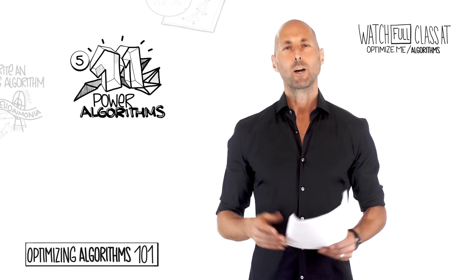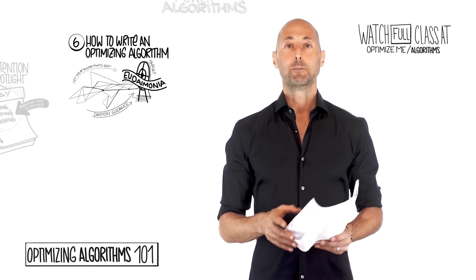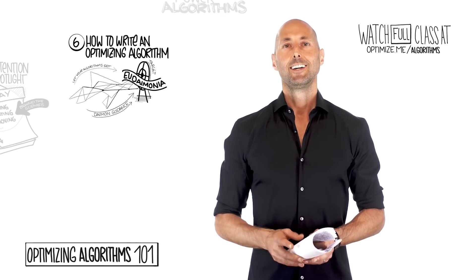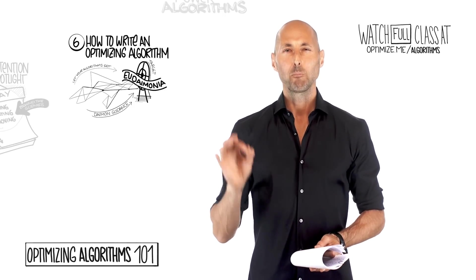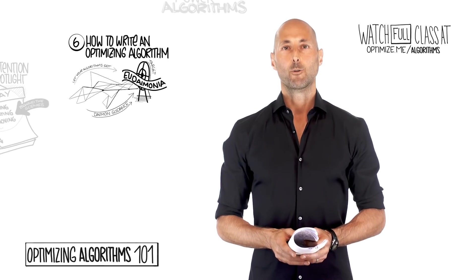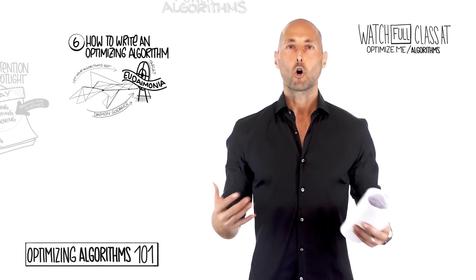The sixth big idea, we're going to get into the details of how to write an optimizing algorithm. Rule number one, or I should say rule number zero, is what? Can you guess the number one rule of writing effective optimizing algorithms? Well, here's a hint.